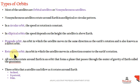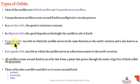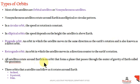We have already discussed prograde and retrograde orbits. A prograde orbit is one in which the satellite moves in the same direction as the earth's rotation, also called a direct orbit. In a retrograde orbit, the satellite moves in a direction opposite to that of the earth's rotation.